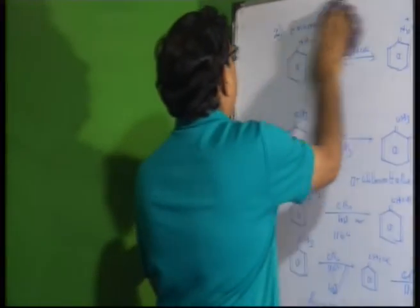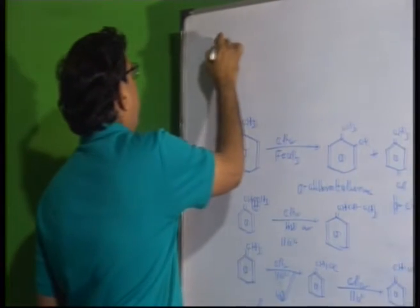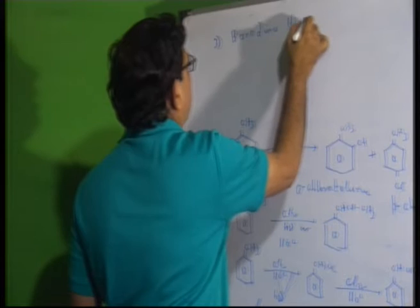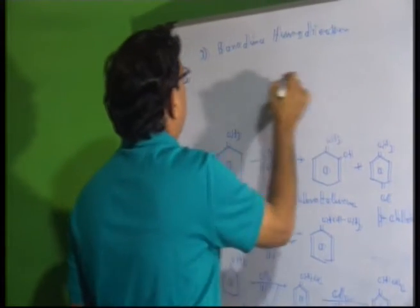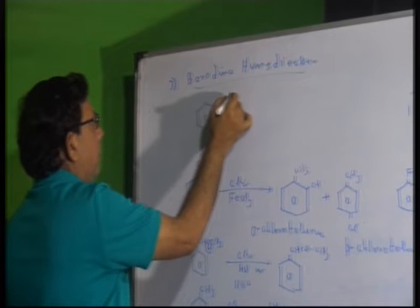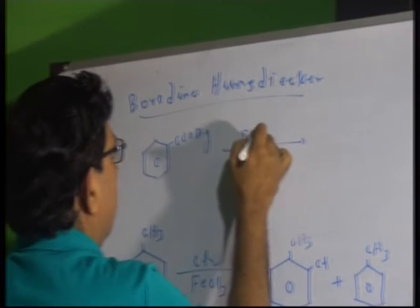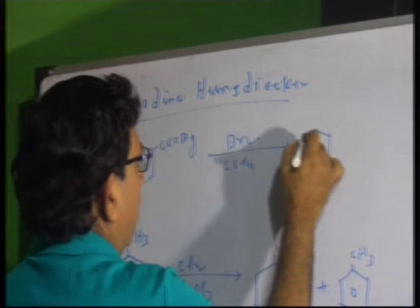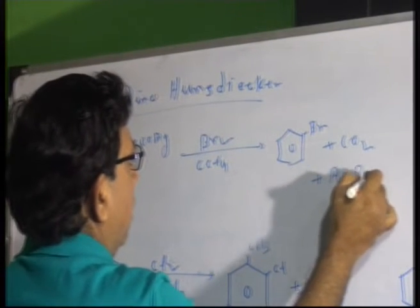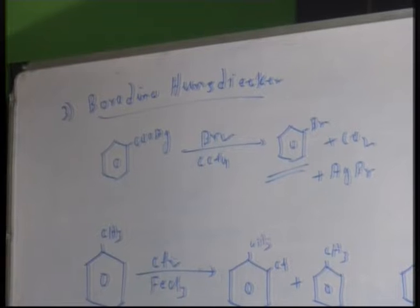The third method is the Borodyne-Hansdicker (Hunsdiecker) reaction. The silver salt of benzoic acid (silver benzoate) when heated with bromine in the presence of CCl4 gives bromobenzene plus CO2 plus AgBr. So bromobenzene can be prepared from the Hunsdiecker reaction.